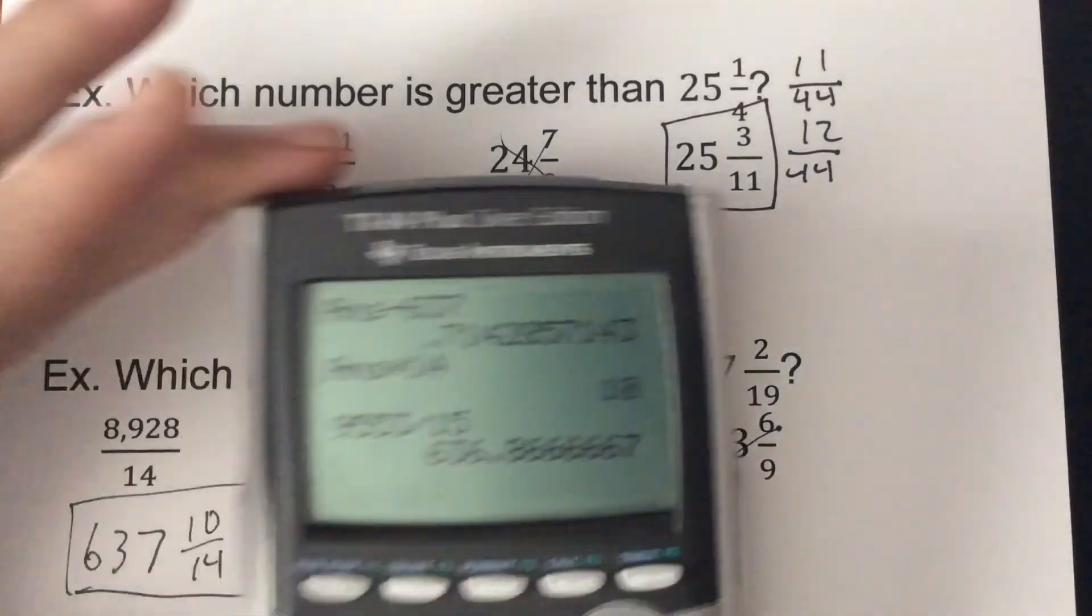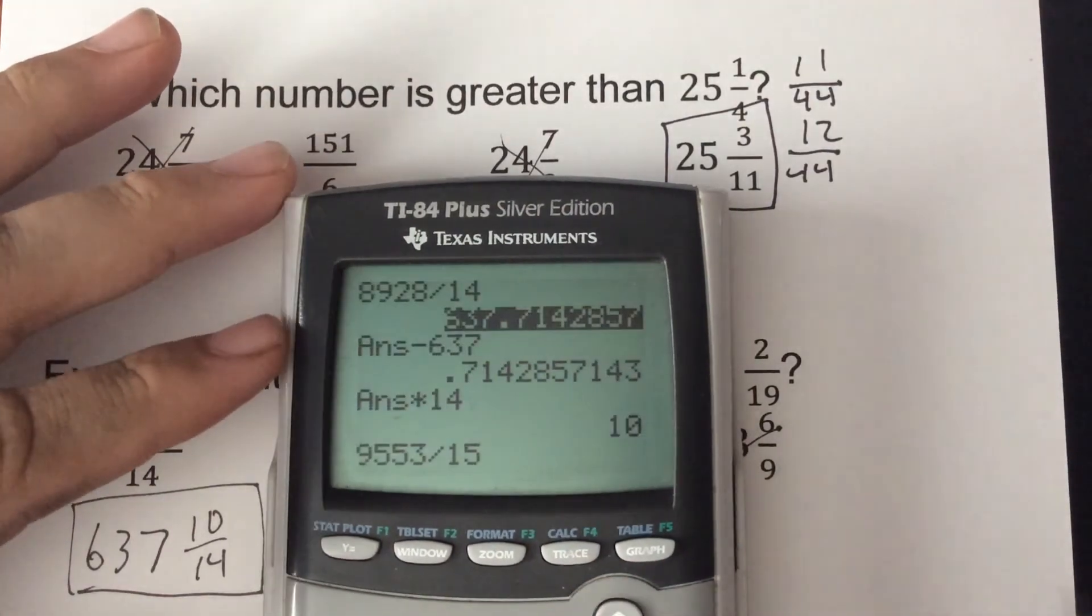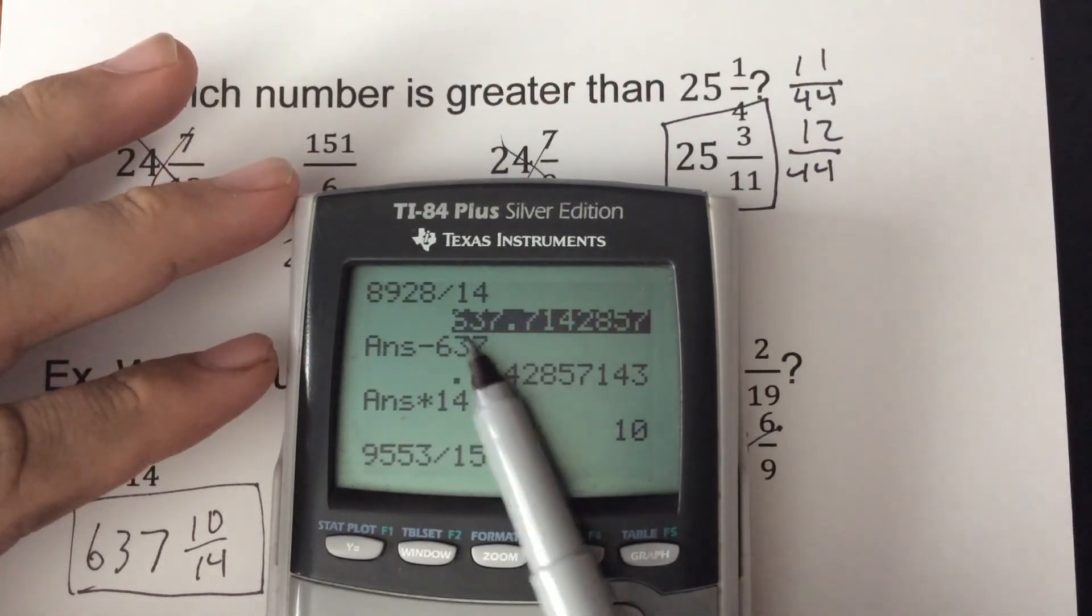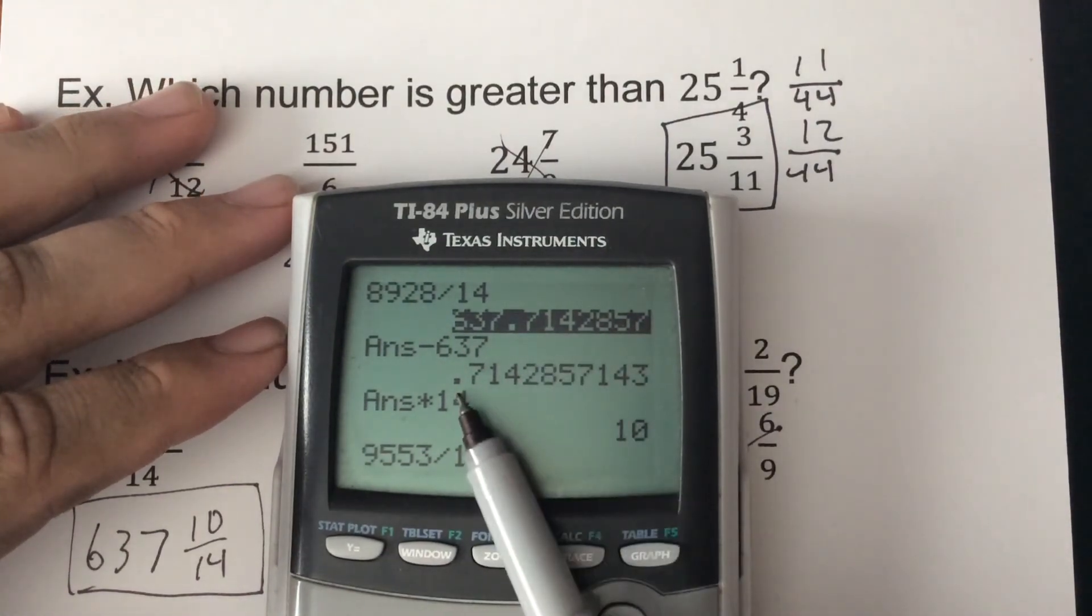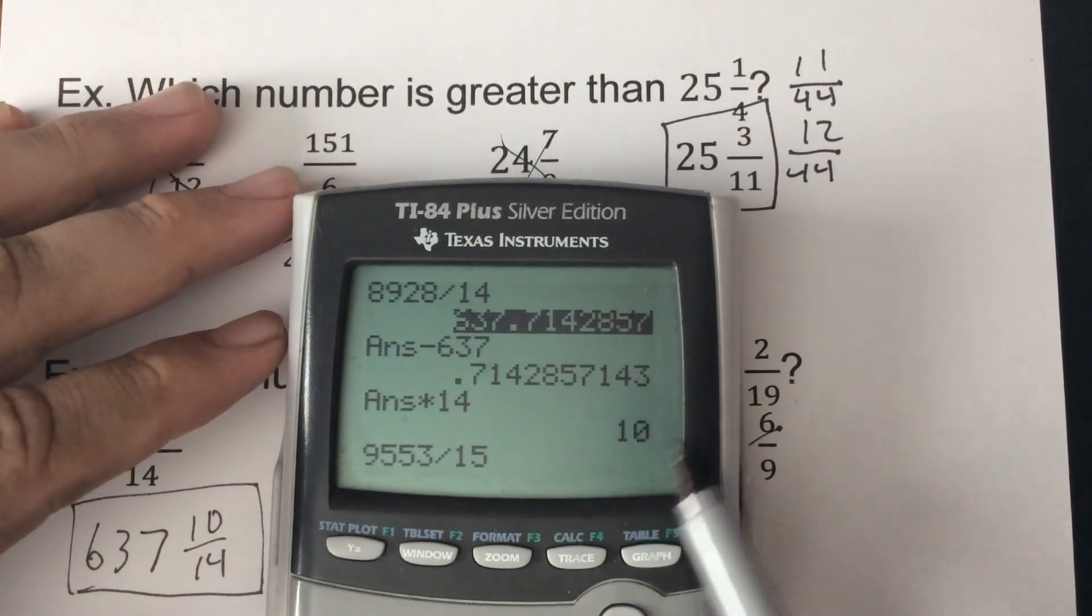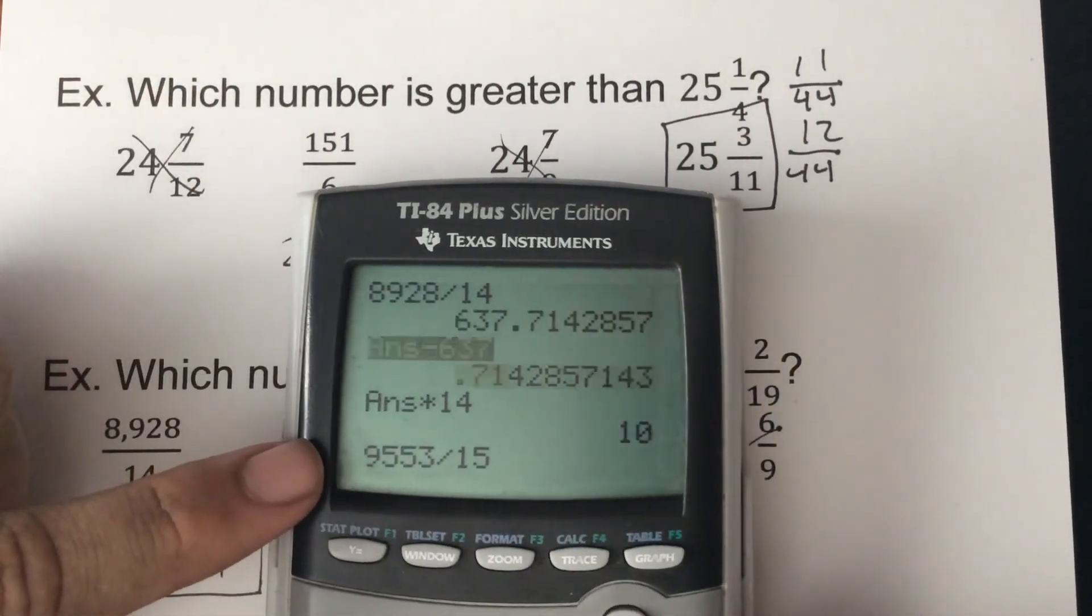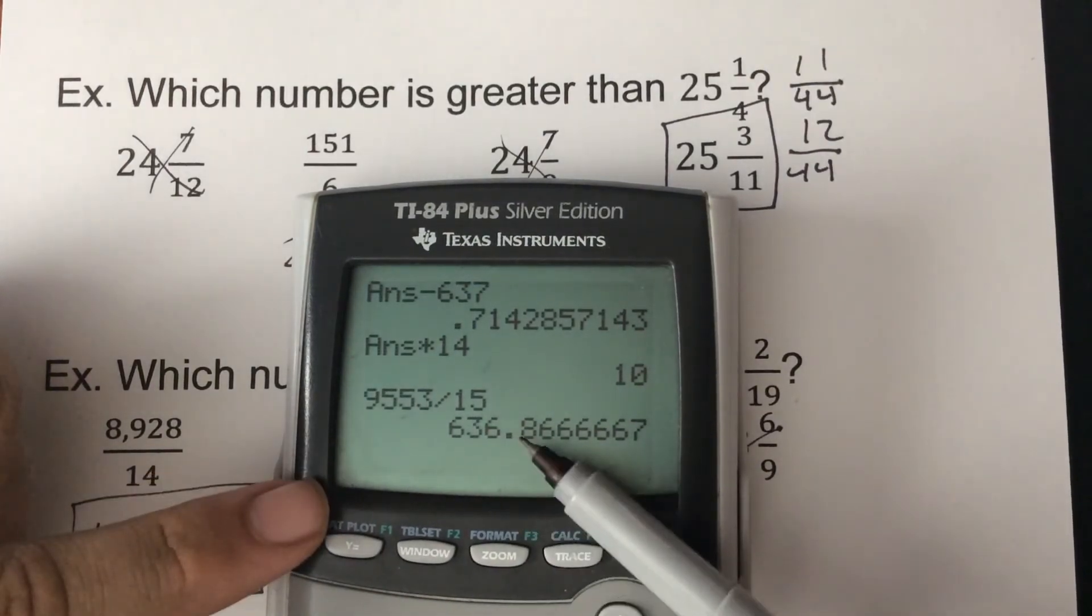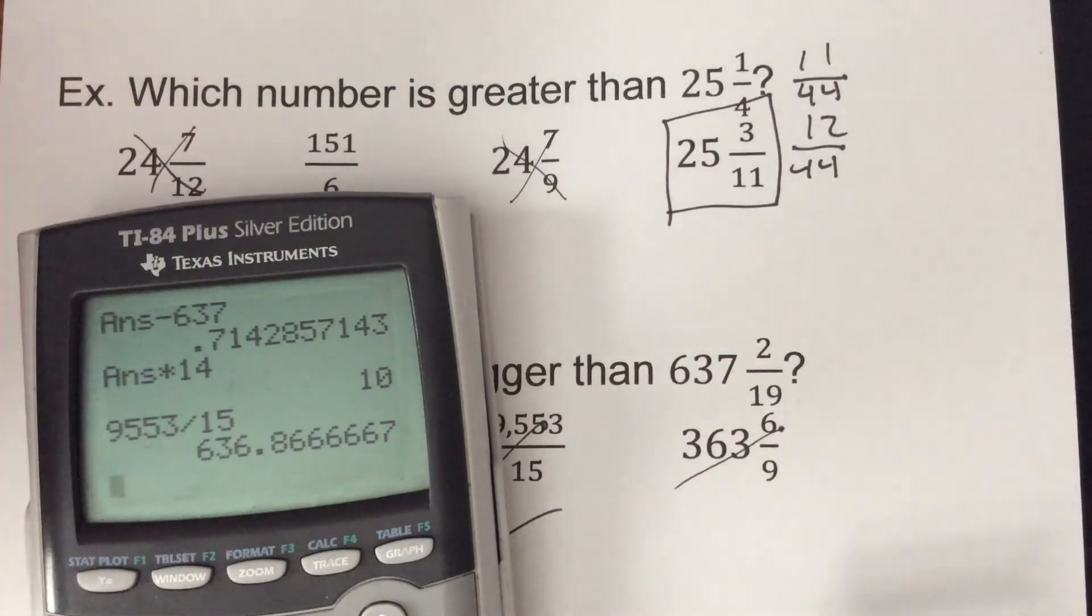So all I did there was, like on that first one, we got 637. So we got a whole number that's the same, so it's got a chance. Looking at the decimal, I then subtracted the 637, took it back times 14 to get how many was left. So 10 over 14. And then this other one when we did it, I could stop after that because we got 636, which is automatically less than 637. So there's no way it could work.